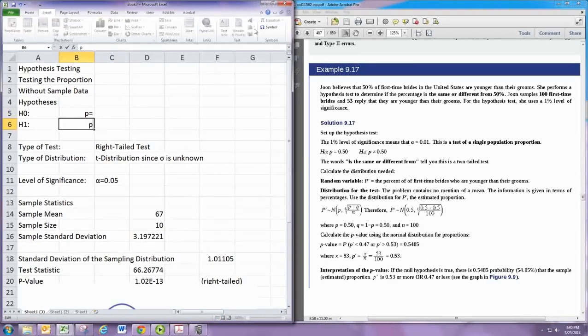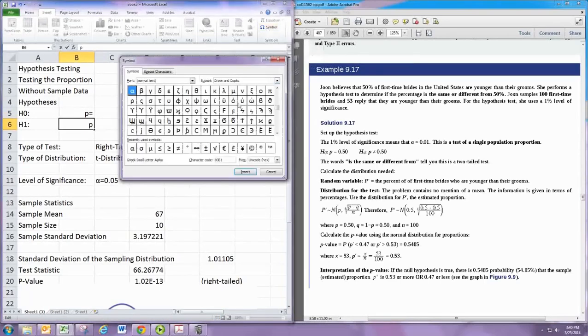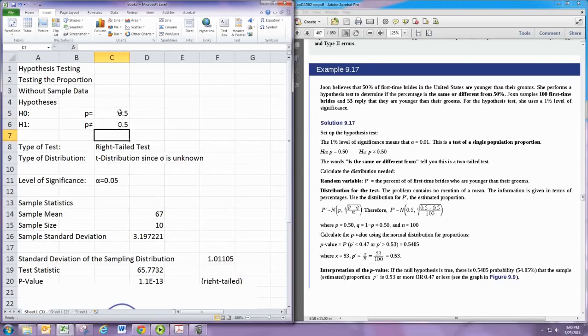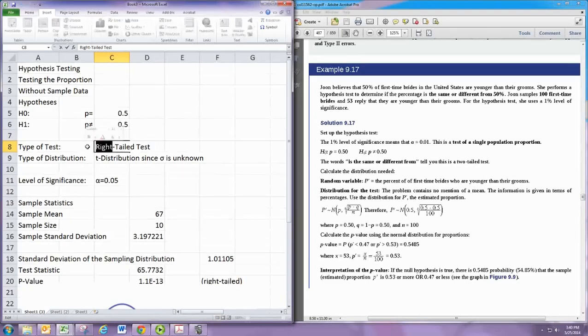So the null would be the or different part. And so we actually get these hypotheses, right? 50% is 0.5. And if the percentage is the same, that's the null. If it's different, that's the alternative. And this is a two-tailed test.